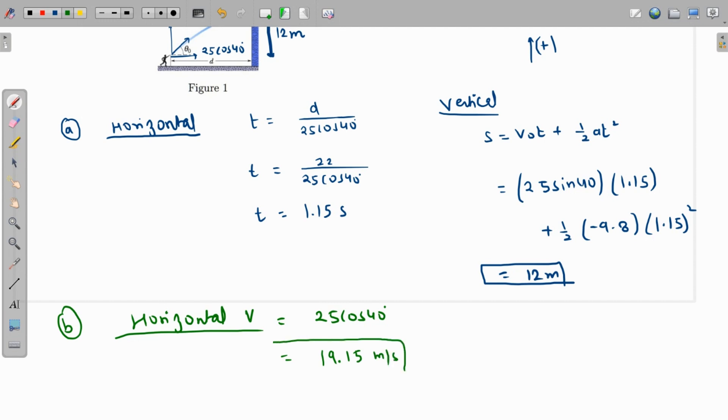Right, this is the horizontal velocity. And for the vertical velocity, we are gonna do v is equal to v naught plus at, the first equation of motion. Initial speed is 25 sine 40,